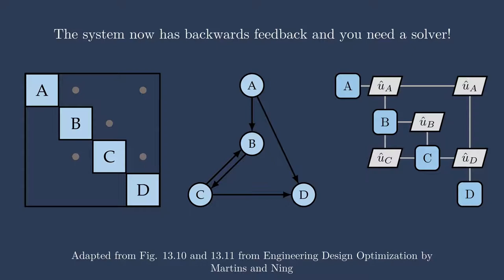Note on the left-hand design structure matrix, we now have a dot between B and C on the lower triangle. Additionally, on the directed graph in the middle, there's an arrow going from C to B. And of course, we already had the arrow going from B to C, so now we see there's two-way coupling. This kind of two-way coupling is very apparent in the directed graph.